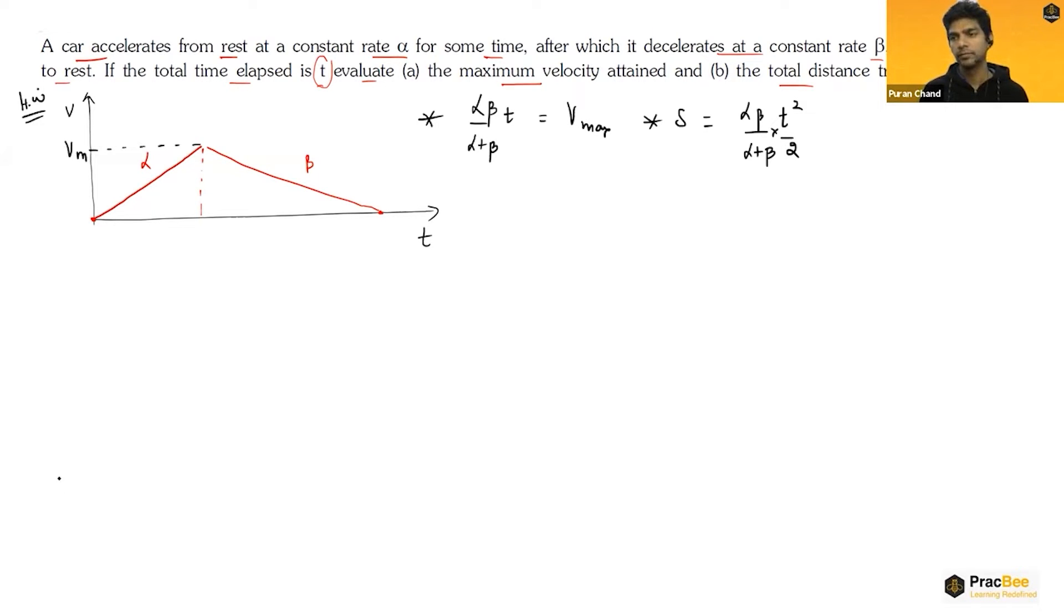If I show it like this, suppose the car starts from A, then up to B it has an acceleration alpha, and then after that it decelerates with an acceleration beta up to C. Initial velocity was zero and the final velocity was zero. At this point the velocity was vm. From A to B the time is t1, and from B to C the time is t2.